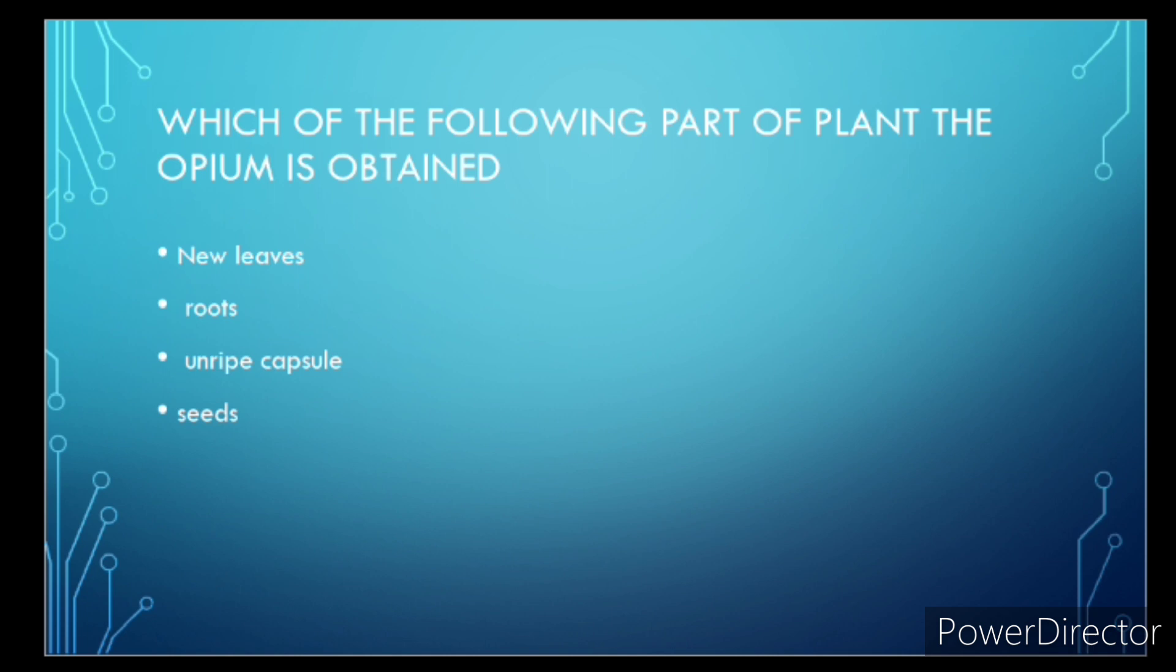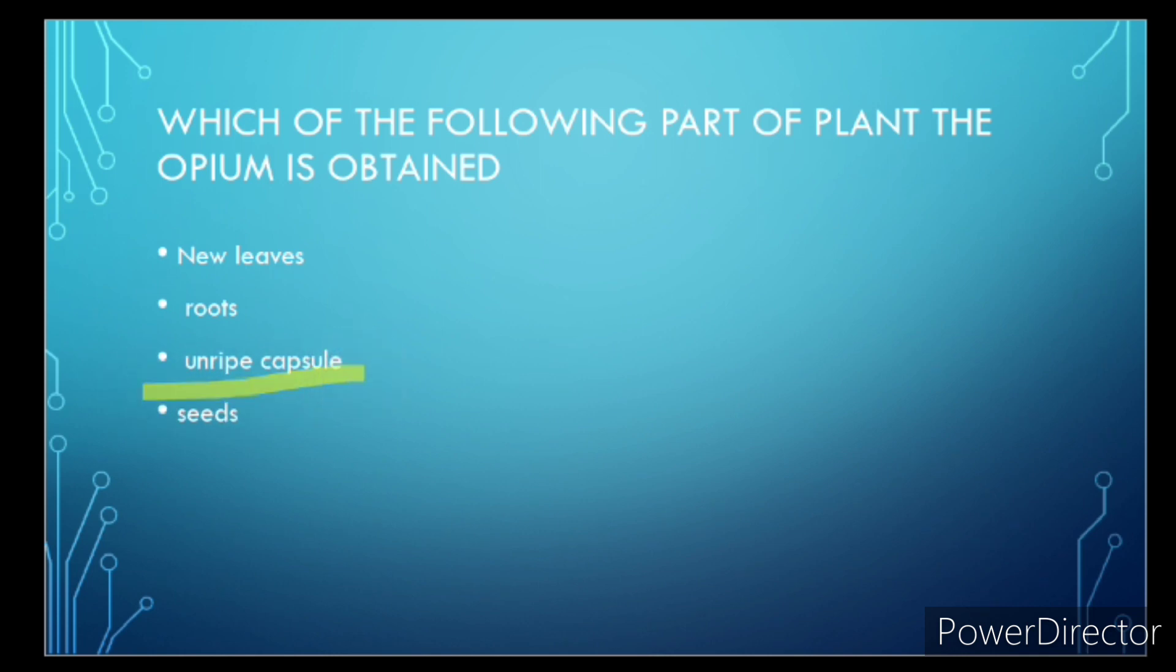Which of the following part of plant the opium is obtained? The correct answer is unripe capsule. The process of photosynthesis is most active in? The correct answer is red light.